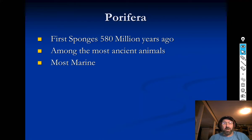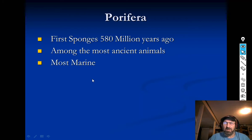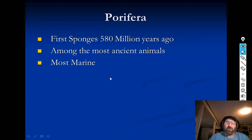There are some freshwater sponges, not a whole lot. There are actually some that live around here — they're kind of small and indistinct, so you have to look for them. I have found them in lakes and ponds around Connecticut, but there aren't very many.